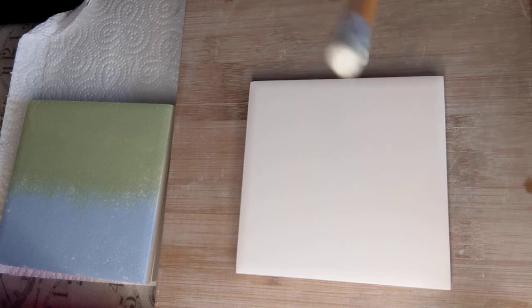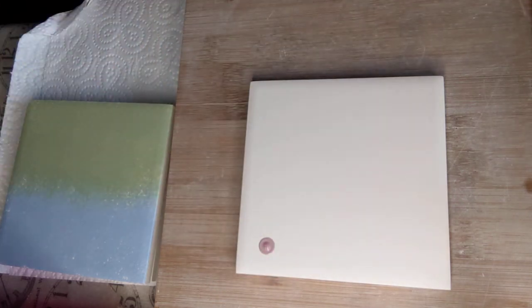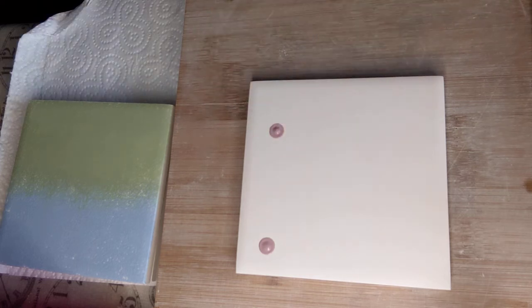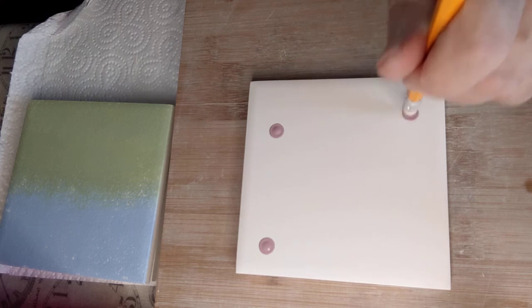Now I find the easiest way of doing a small dot is with the eraser of a pencil. You just dip it in your paint and then press onto the piece of ceramic that you're doing, and you can see it gives you a really nice round blob.